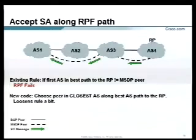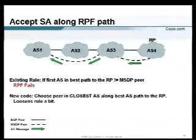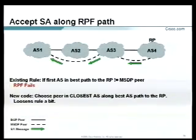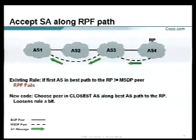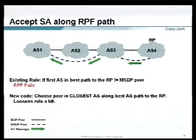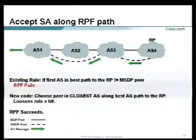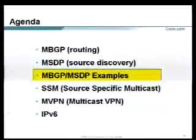The last new addition: in existing rules, if the first AS in the best path back towards the originating RP is not your MSDP peer's AS, RPF fails. Now we've relaxed that — you just look at the AS path and find the closest AS. If that AS matches your MSDP peer's AS, you accept it. That's MSDP.